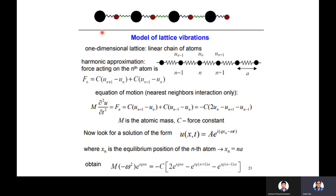How do we model the lattice vibration and find the expression for it? Let us consider a simple one-dimensional crystal — a chain of atoms. Suppose this is a diatomic picture, but if we take a monoatomic lattice, only atoms of the same mass are arranged regularly. We can consider this one-dimensional lattice motion in the harmonic approximation.